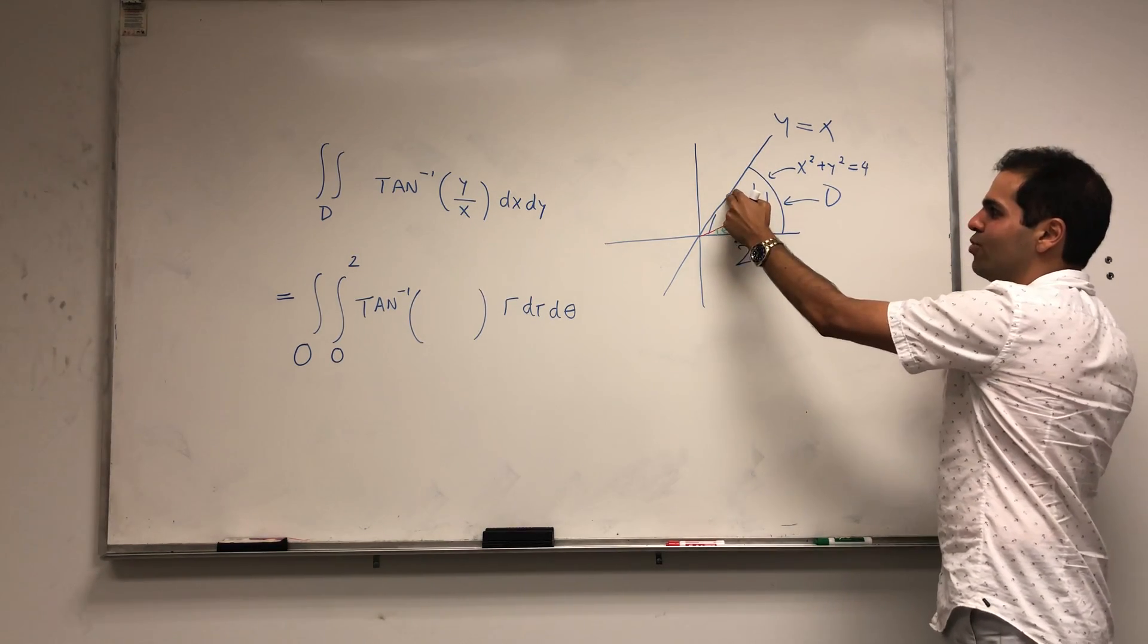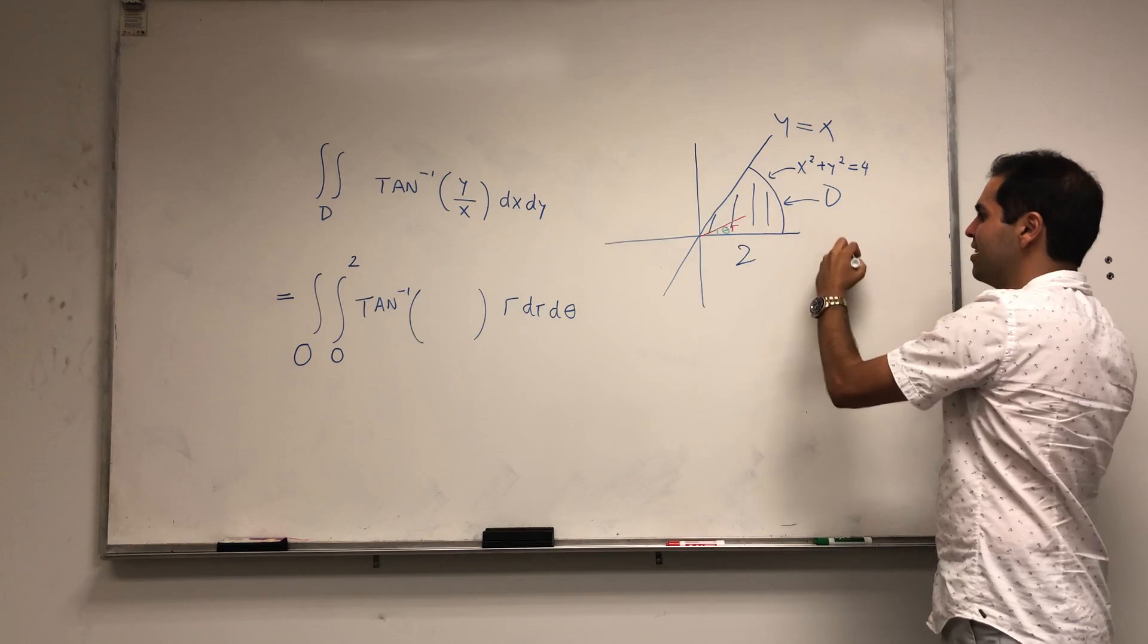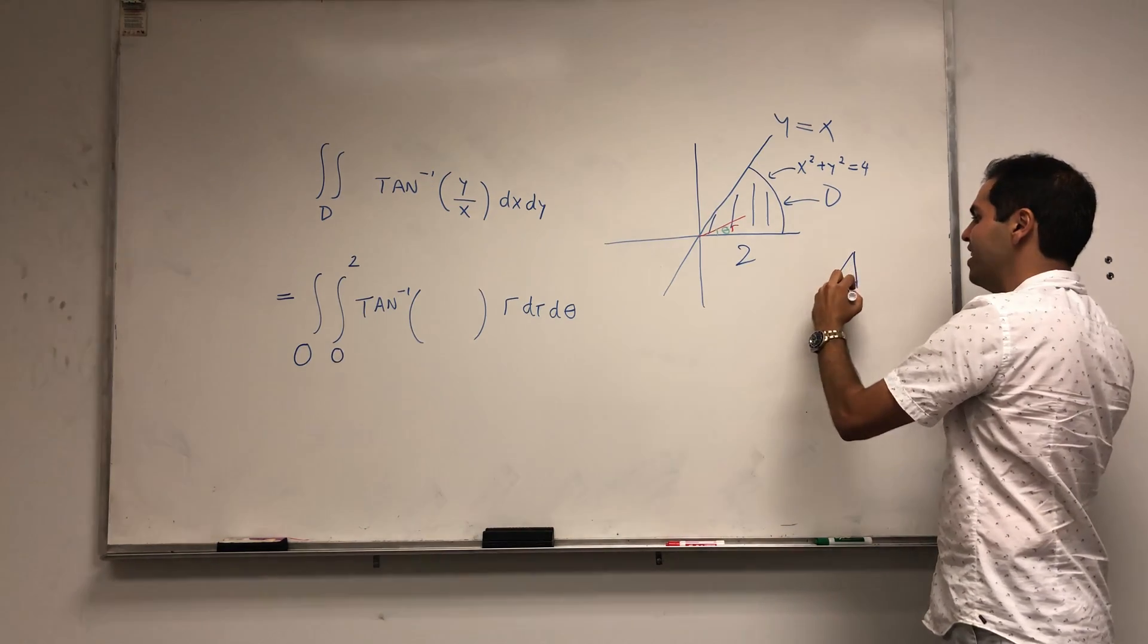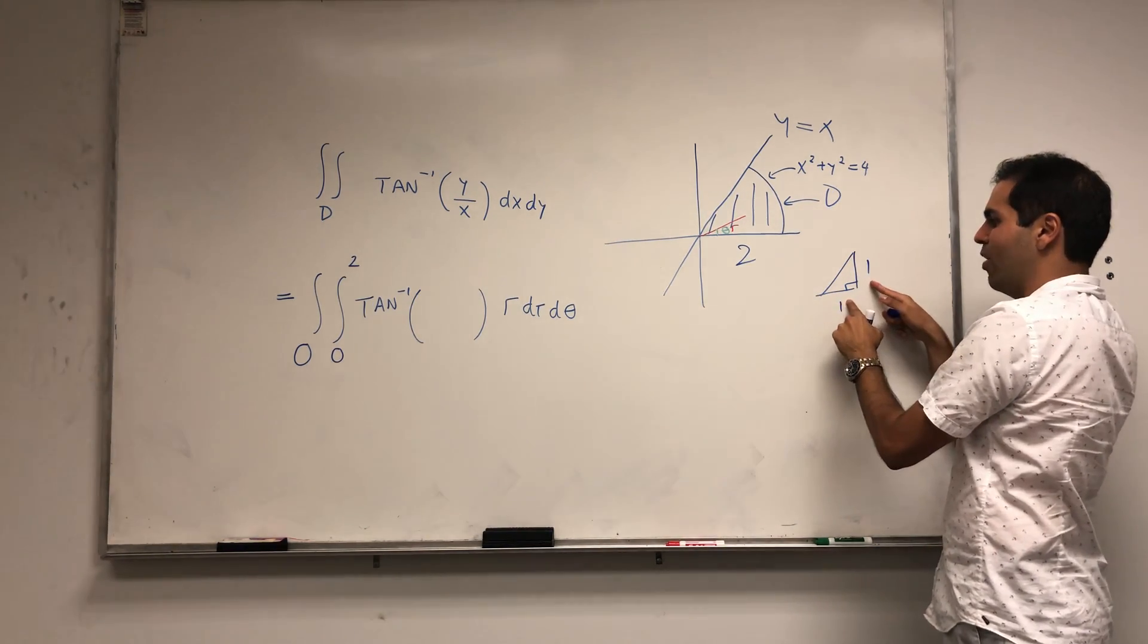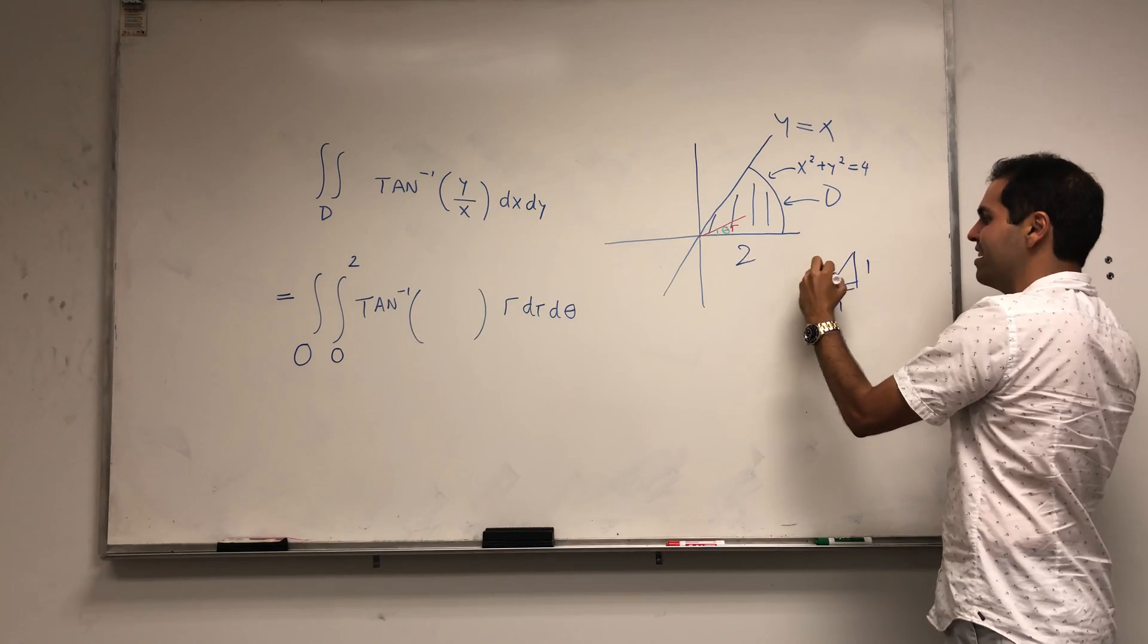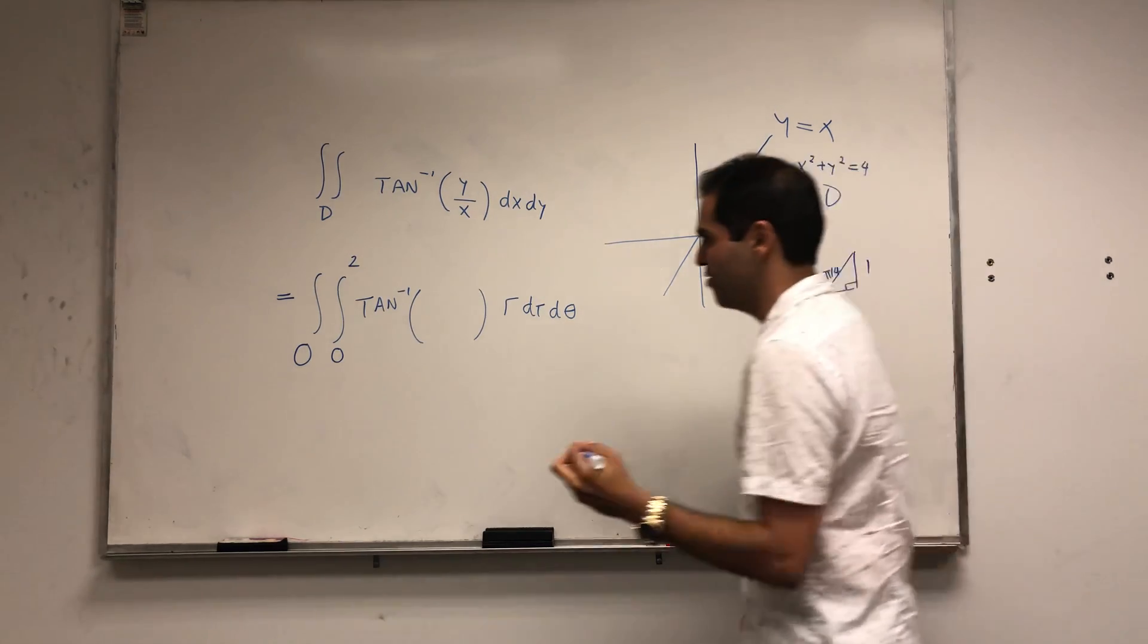So it has to be pi over 4. Or what you could do is just plug in a couple of points. If this is 1, this becomes 1, and we have a right triangle with 1 and 1, so the biggest angle has to be pi over 4.